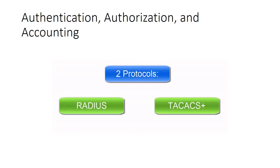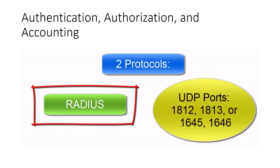There are two main protocols to choose from in addition to LDAP: RADIUS and TACACS+. Both protocols perform similar functions, but it is the background processes that differentiate them. RADIUS uses UDP ports 1812 and 1813, or alternatively 1645 and 1646. It combines authentication and authorization while encrypting only the password, sending the rest of the packet unencrypted, or as clear text.